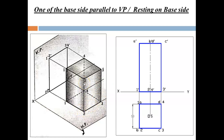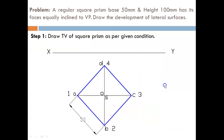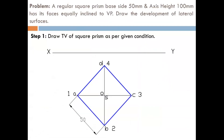Now let's start with the problem. A regular square prism having a base side of 50 mm and axis height of 100 mm has its faces equally inclined to the VP. Draw the development of the lateral surfaces. The important words here are 'faces equally inclined to VP.'